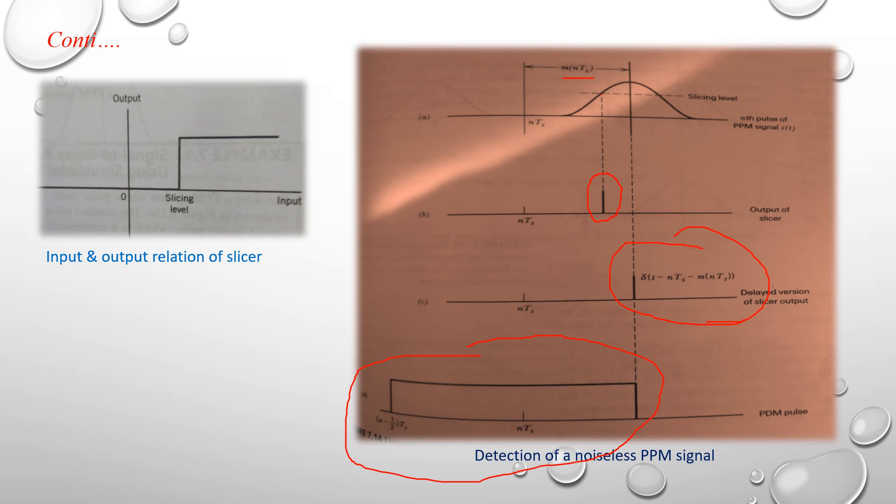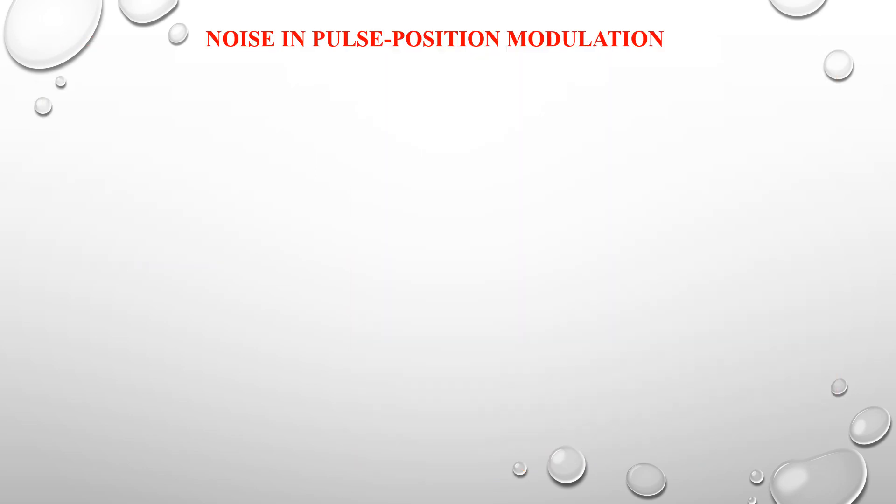The main function of the slicer is to reduce the noise factor or eliminate the noise present in the receiver. To find the noise present in Pulse Position Modulation, we first need to find the figure of merit. To find the figure of merit, we need to determine the SNR output and the SNR channel.